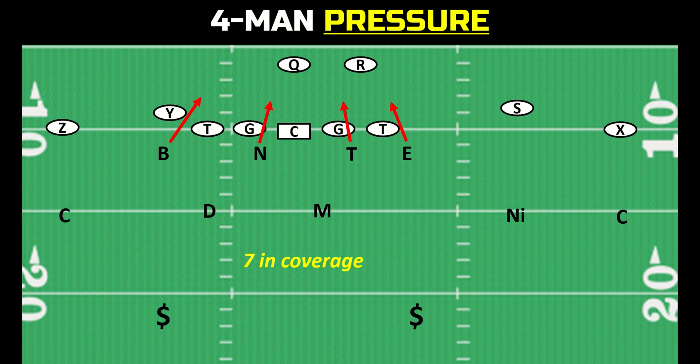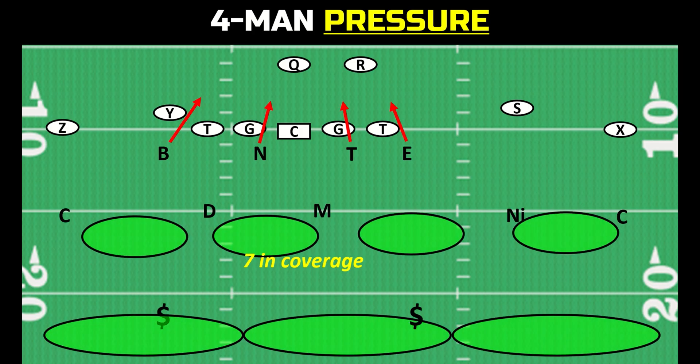A regular call is a four-man pressure with zone behind it — seven in coverage. This is simply called a coverage, a regular coverage: cover two, cover four, cover six, cover eight, cover three. Regular zone, nothing fancy, no one blitzing. This is just a traditional regular call — four rushing the passer, seven in coverage, playing zone.